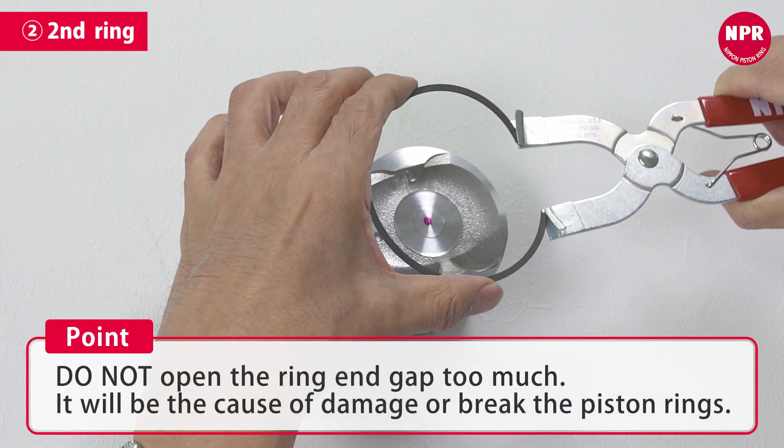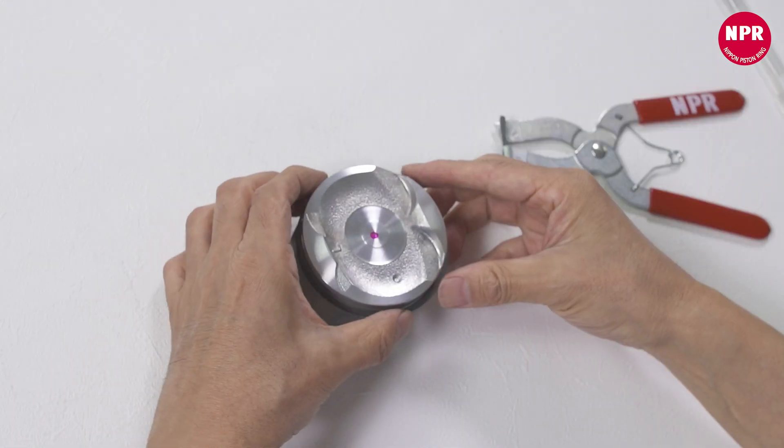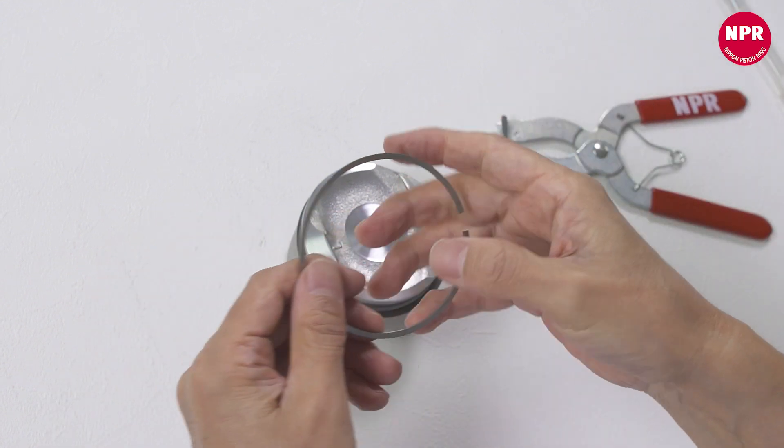Do not open the ring end gap too much. It will be the cause of damage or break the piston rings. The second ring installation process is now complete.